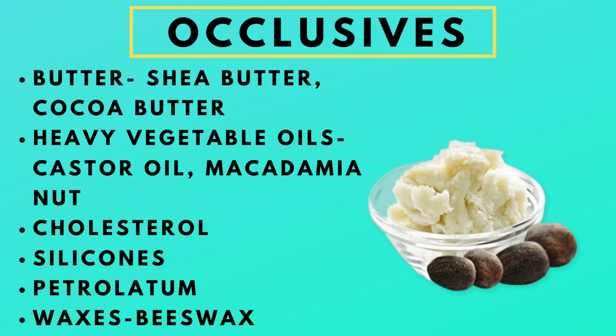Now let's move on to occlusives, because they're very close to emollients. Occlusives are basically your sealants. They provide a hydrophobic or water-repelling barrier, locking in that moisture to your hair strand and preventing any moisture loss. Occlusives can also be emollients — that includes your butters and heavier oils that seal and do not penetrate into the hair shaft.